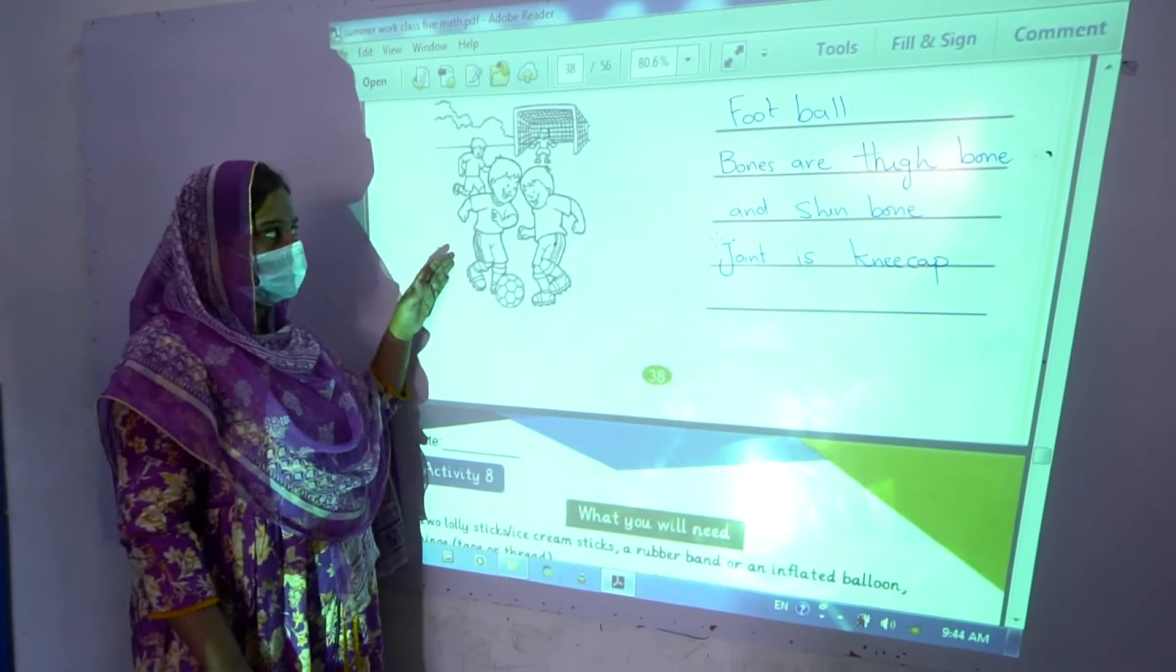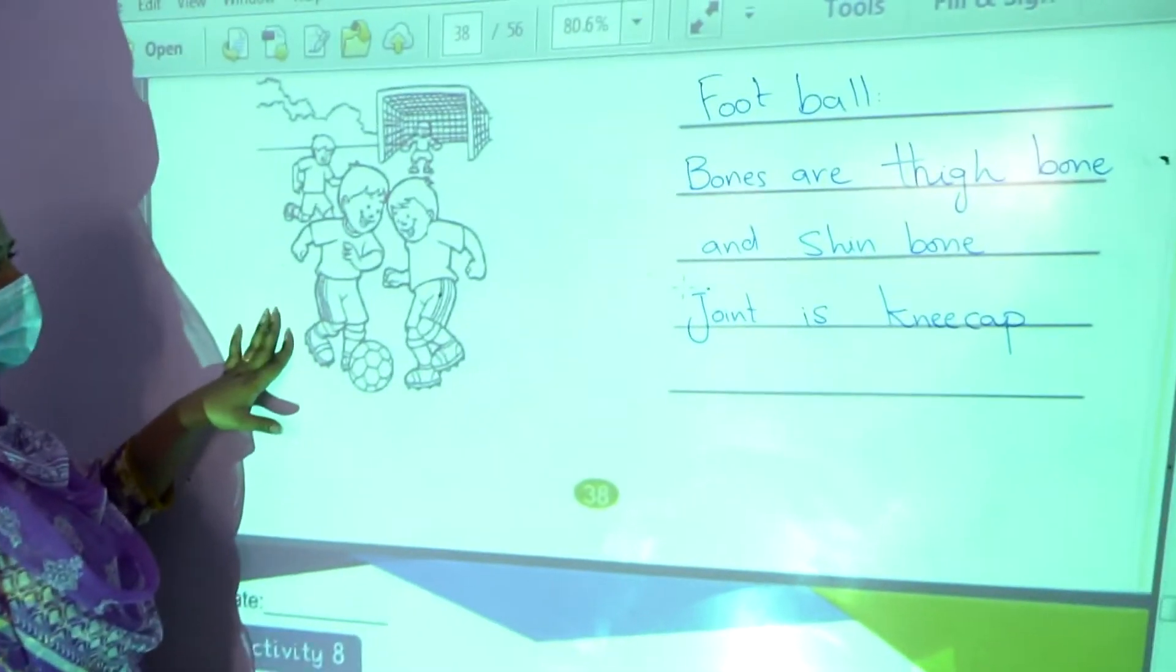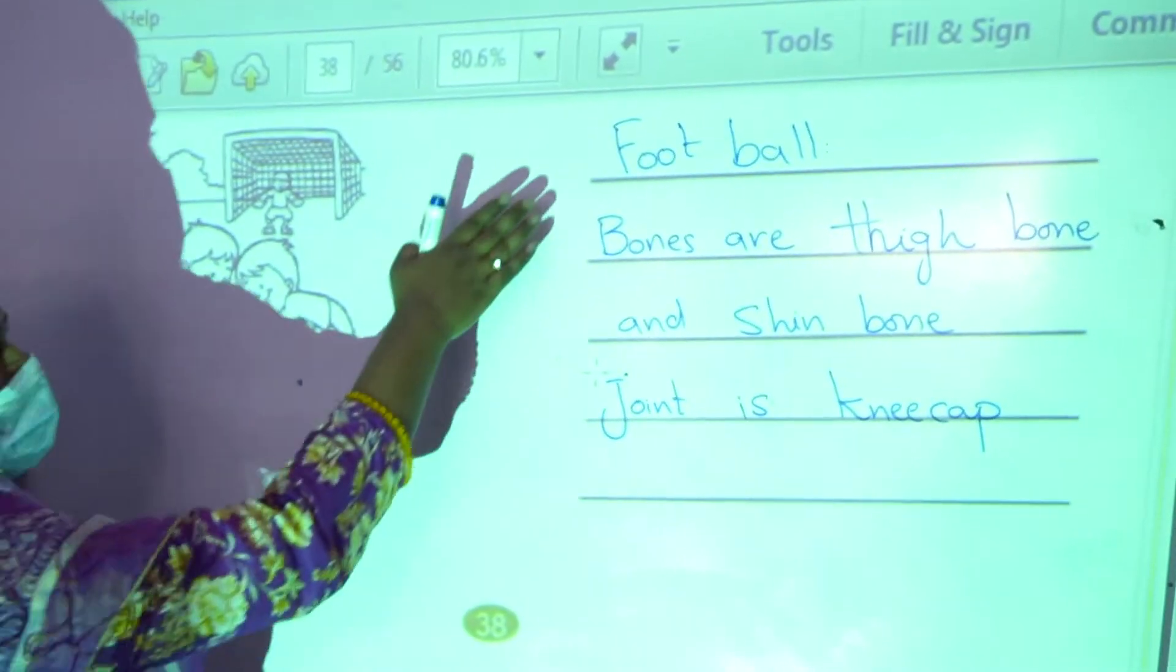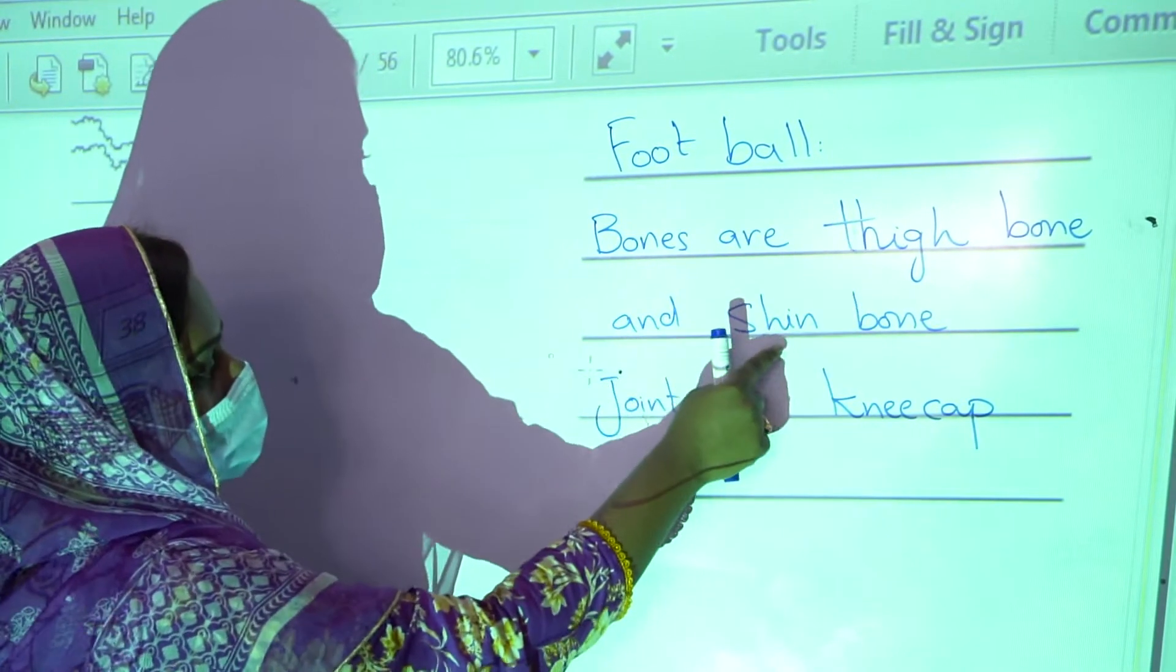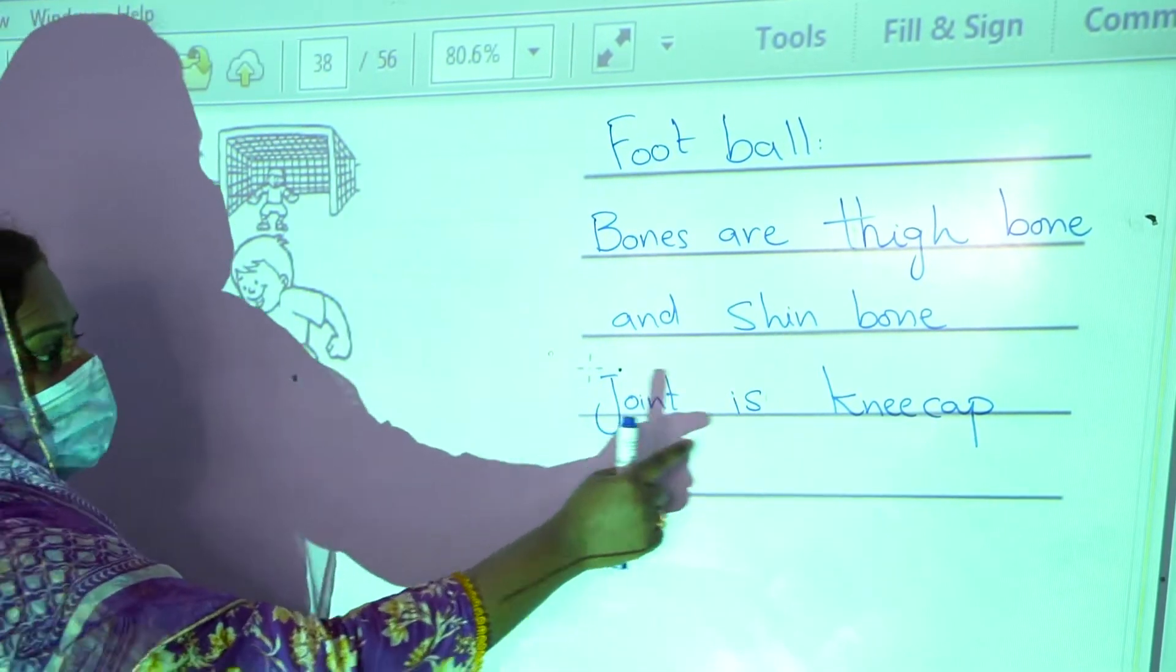This is picture number 3. In this picture, children are playing football. In football we use bones that is thigh bone and shin bone and joint is kneecap.